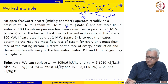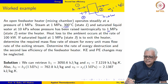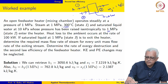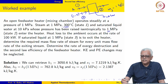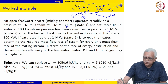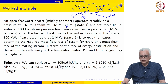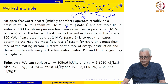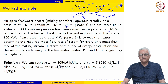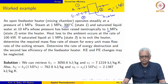We assume the mass flow rate of steam to be x kg per second, so the mass flow rate at inlet 2 is 1 minus x kg per second, since the exit mass flow rate is 1 kg per second. We are asked to calculate the rate of exergy destruction and the second law efficiency of the feed water heater.